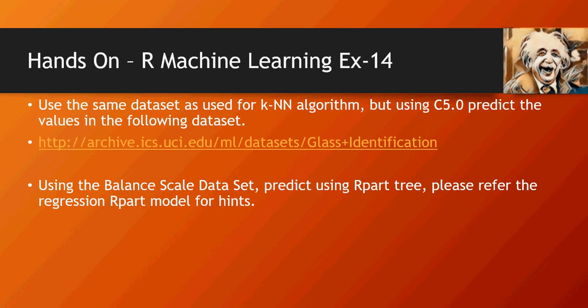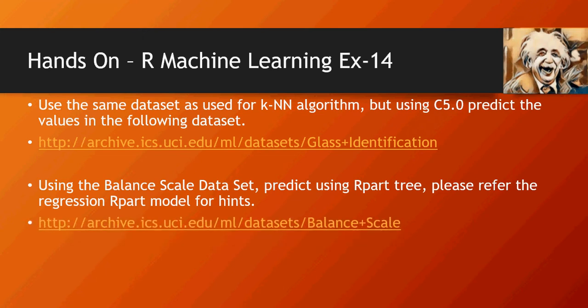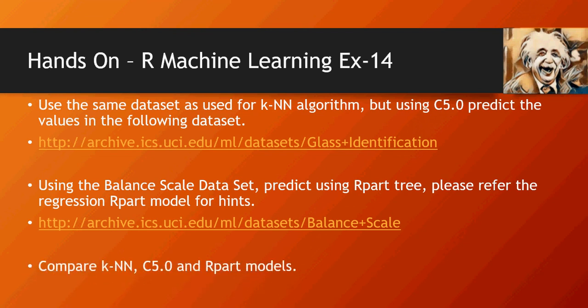Please remember that we used the RPART decision model in the numeric regression phase. So use that RPART tree and see how RPART gives you the values for the balanced scale dataset. The balanced scale dataset is available at this link.